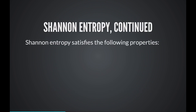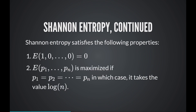The Shannon entropy satisfies the following properties. First, if there's only one species present, the Shannon entropy of that distribution is zero. From an information-theoretic perspective, if you know you'll always encounter just one species, there's no uncertainty in your sampling process — that's the minimum. Second, Shannon entropy is maximized exactly when the distribution is uniform, because you cannot predict what's going to happen. In that case, the maximum is the log of n.